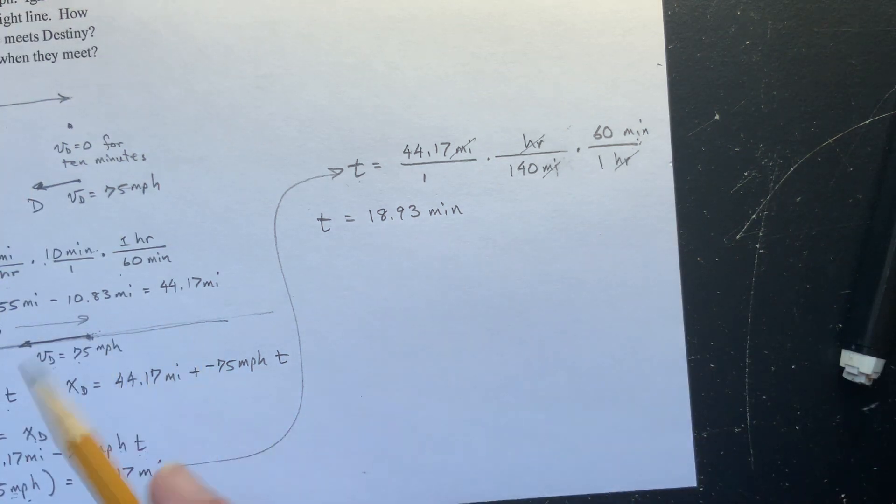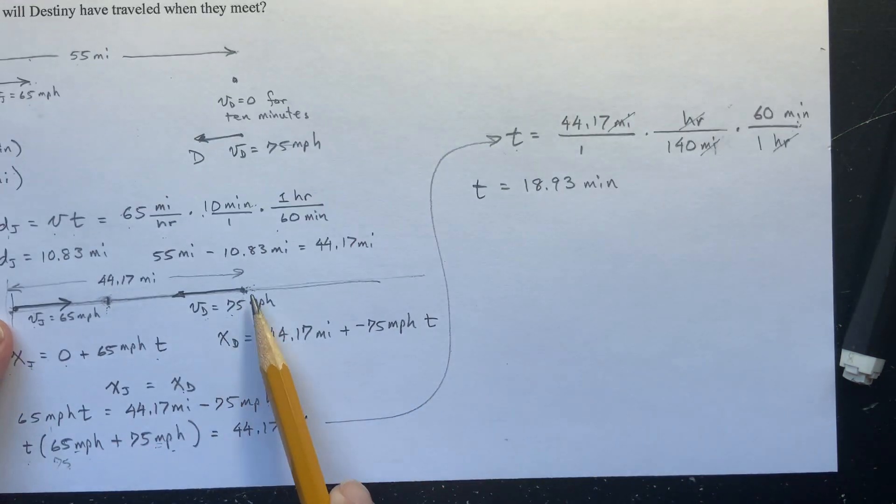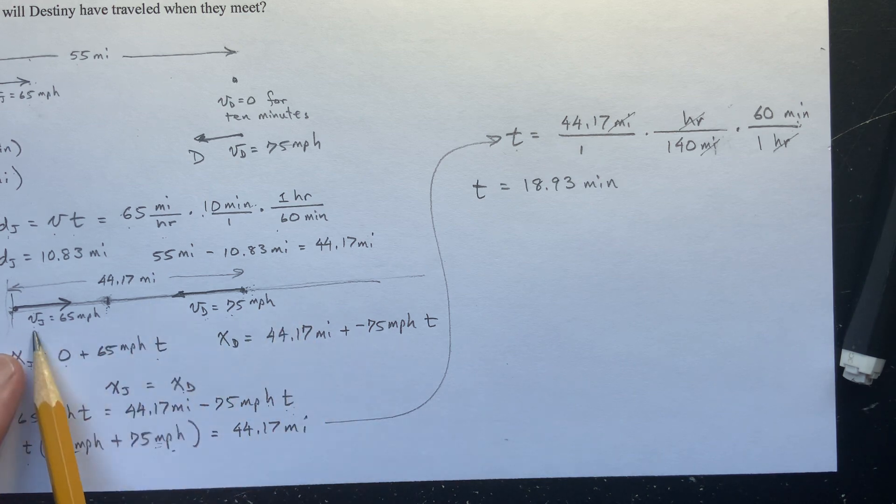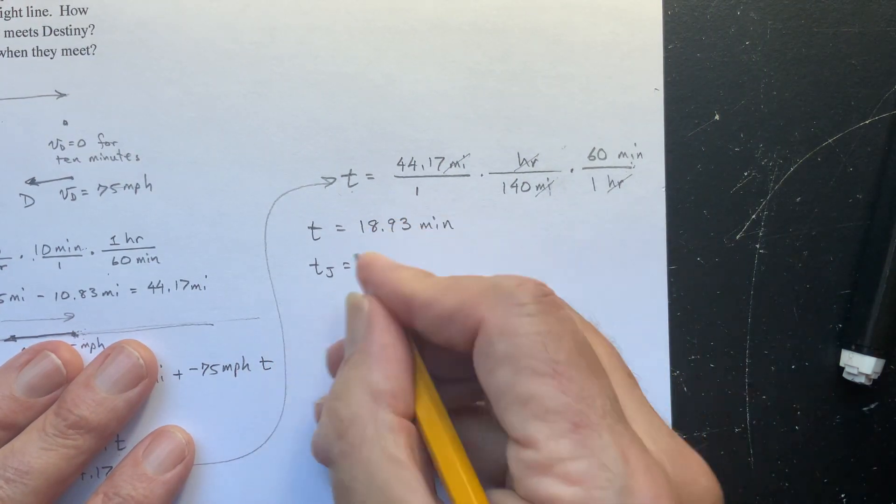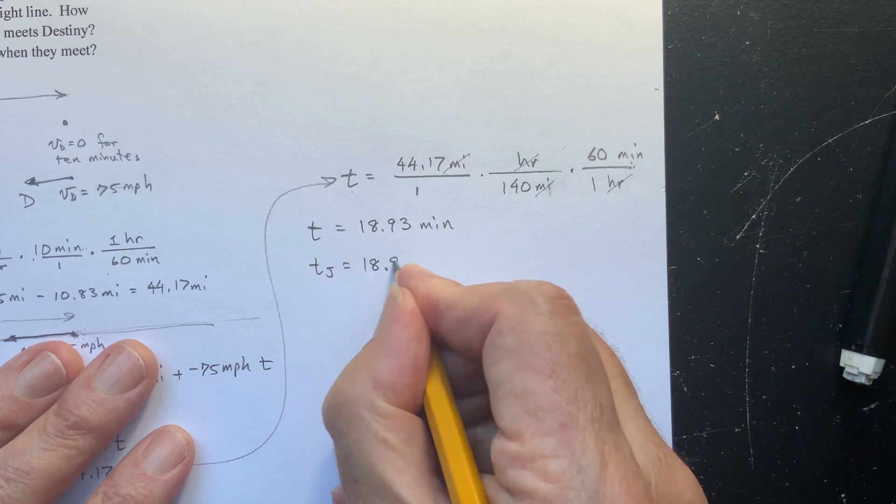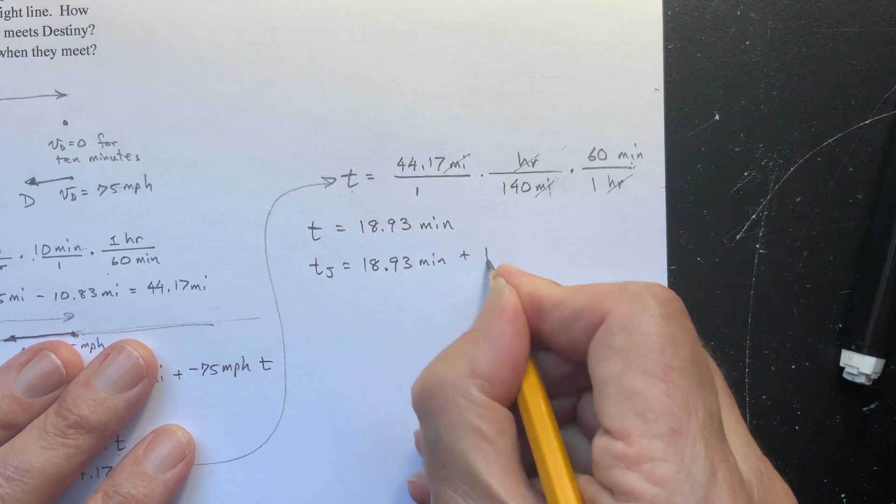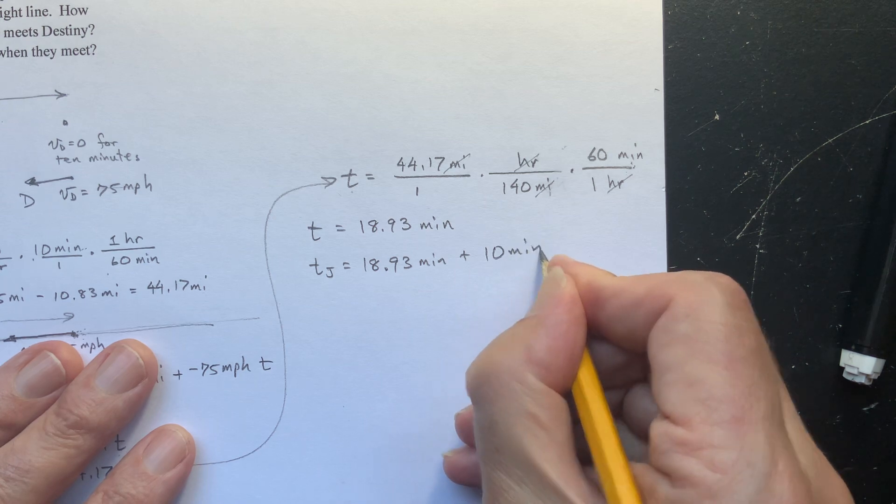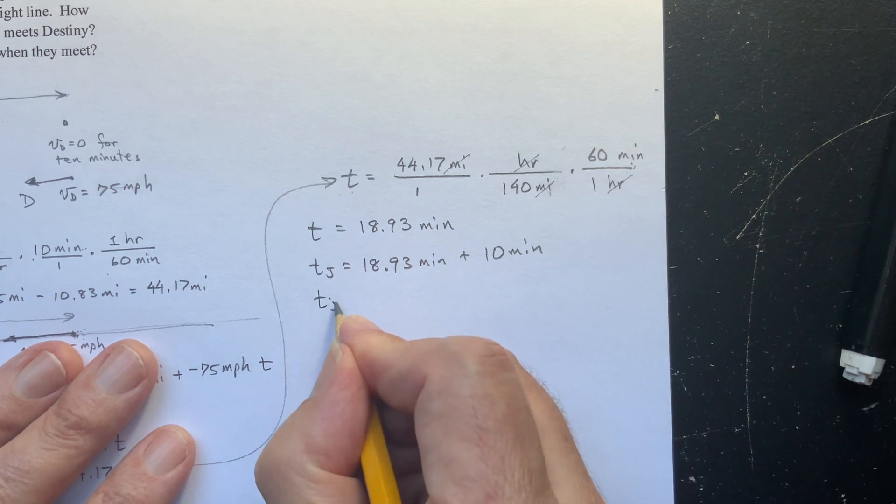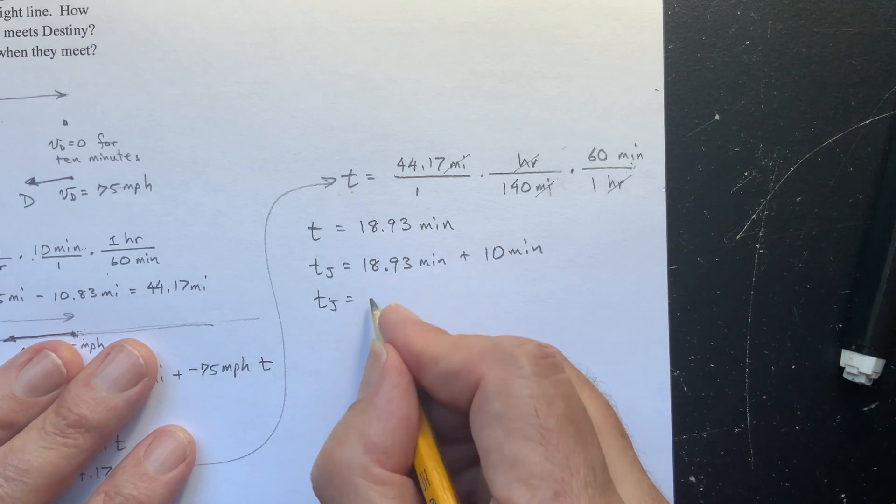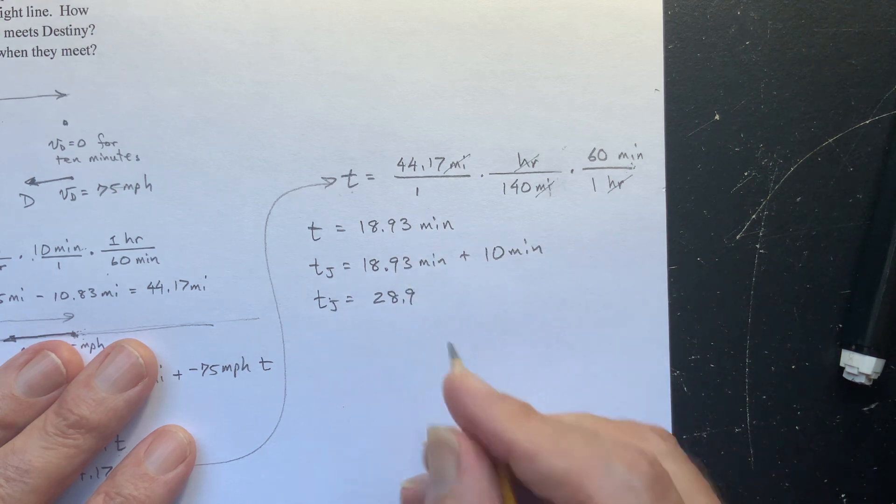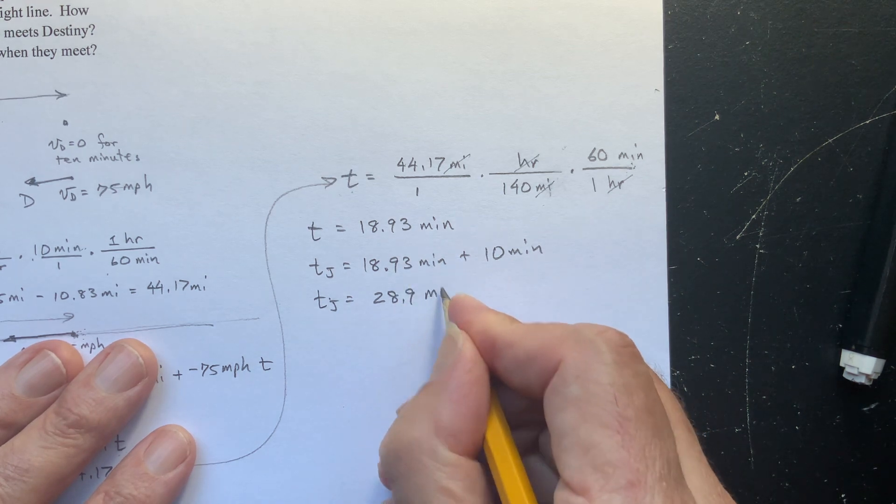Now, really what this is, this is how much time destiny was driving, isn't it? Right? But, and they were driving for the same time, except that in the first part, Jada was driving for 10 more minutes. So the time for Jada is equal to 18.93 minutes plus 10 minutes. So the time that Jada was driving is 28.9. We'll just round it off to three significant figures, 28.9, and we'll just round away, round that off, minutes. And there we go. So Jada can now make her travel plans.